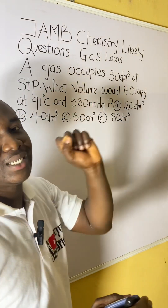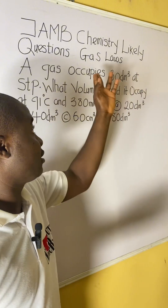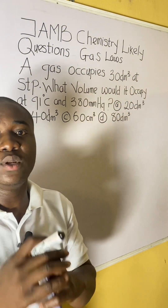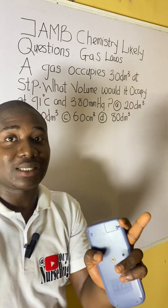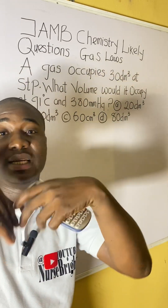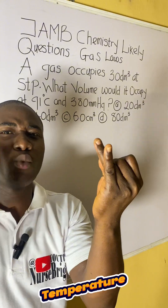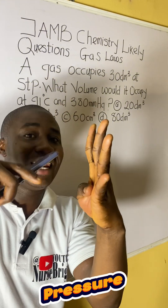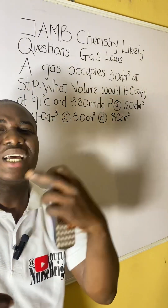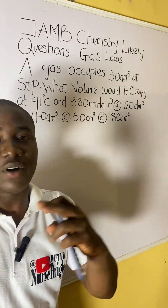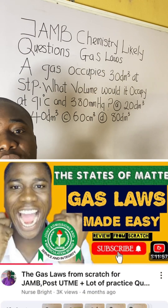We must understand the first statement in the question — it is very important. As a quick summary: gases have various behaviors, and the behavior of these gases is determined by different parameters, which include volume, temperature, pressure, and the number of moles. In that video lesson, I analyzed every single parameter including unit conversions, so go watch it.